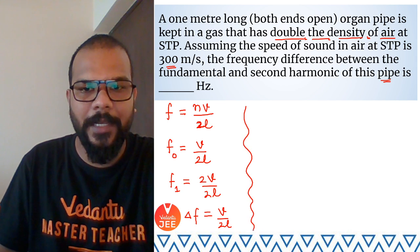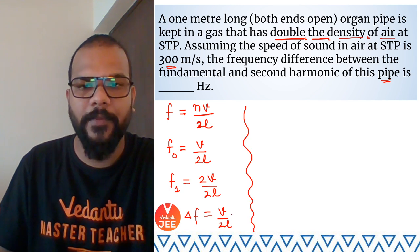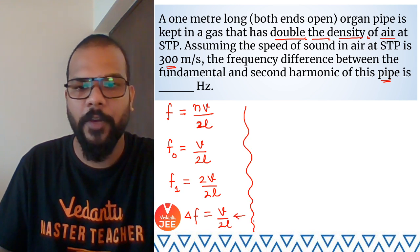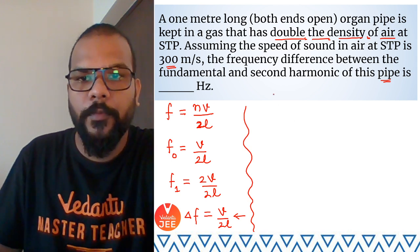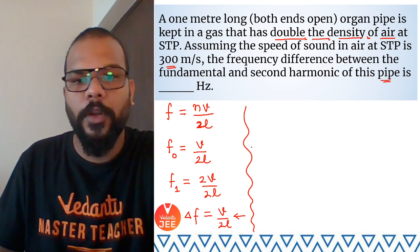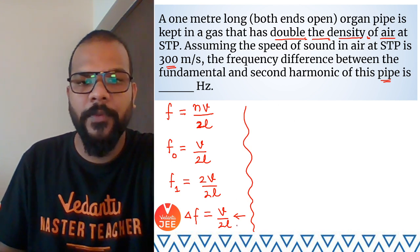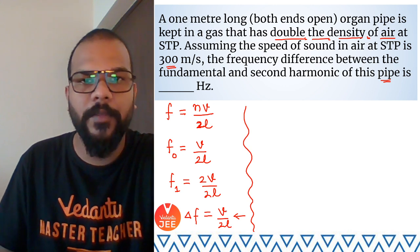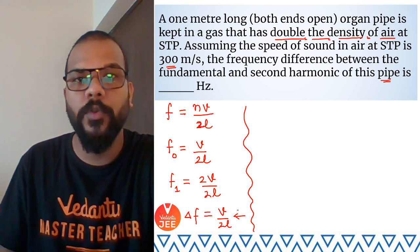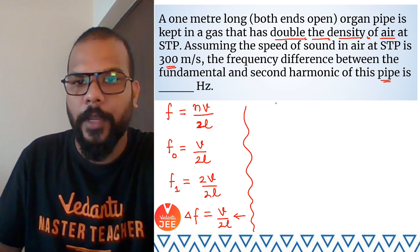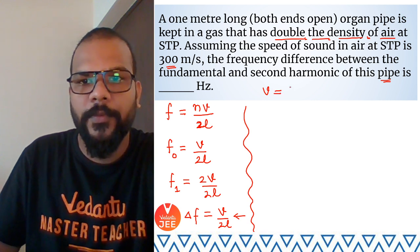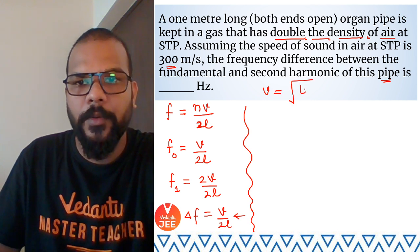So the frequency difference v/2L is what we are interested in for this pipe. However, we do not directly know the value of v for the gas inside the pipe — we know l is 1 meter. So we will have to find out the velocity of sound in this organ pipe. We know that velocity of sound equals the square root of E by rho.